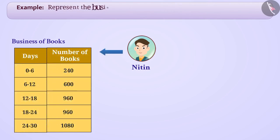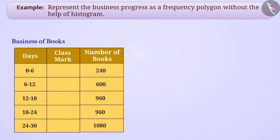Represent the business progress as a frequency polygon without the help of histogram. We need class marks to create a frequency polygon independently. We know that the midpoint of class interval is called a class mark. Can you tell how we find the class marks? Think!